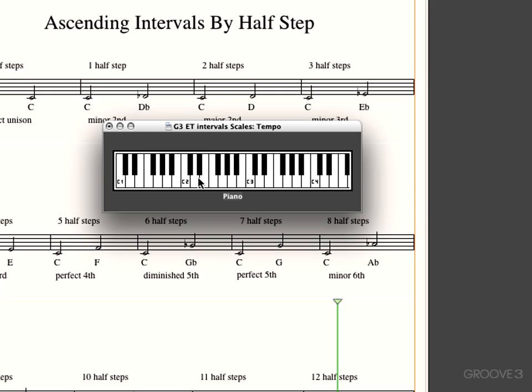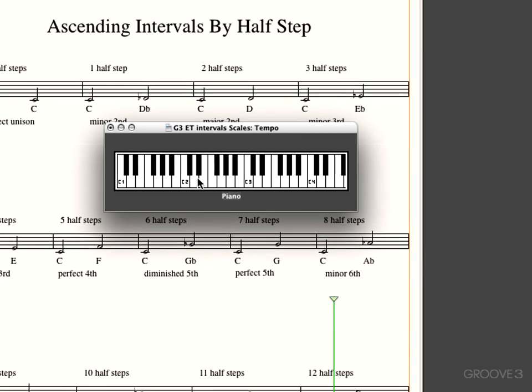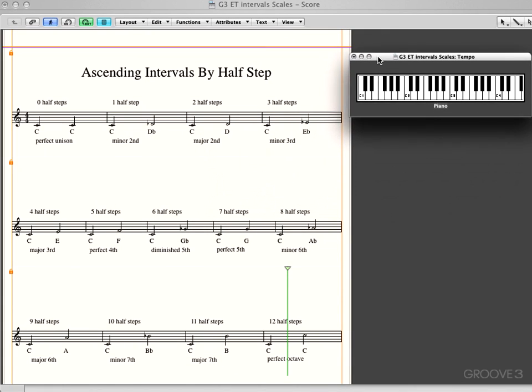And the half-steps are a building block to naming intervals. This is one way of two ways to arrive at the interval's name. Now half-steps may also be called semitones. They also may be called minor seconds or augmented unisons. We'll look at that later. Let's go ahead and take a look at what we've got over here.